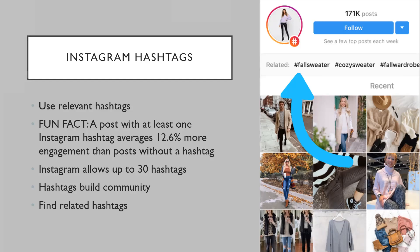I personally have an Instagram for my dog and I use about 20 hashtags, and that really increases following. Hashtags build community — with my dog's Instagram I'll use hashtags like #CorgisDoingThings or #Corgi, and all these other corgi pages will start following me and commenting on my page. It really increases your visibility and gets you more follows and likes.